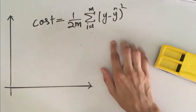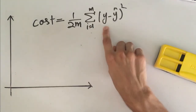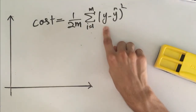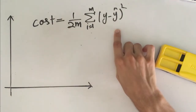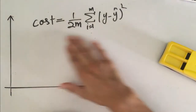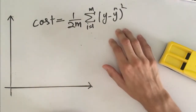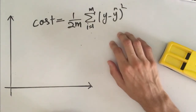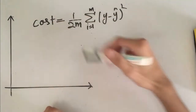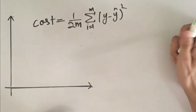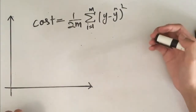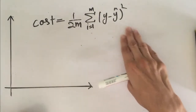In the previous video we saw that the cost function formula is given by this, where M is the total number of data points, Y is the actual value or the labels, and Y-hat are the predictions. For the straight line to fit the plot, the cost function or error representation should be minimum, and to minimize this we need to use the gradient descent algorithm.